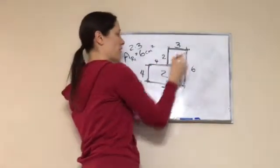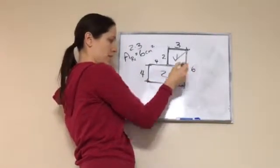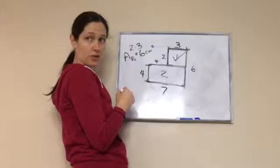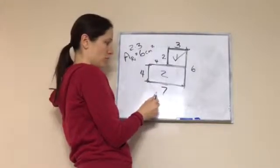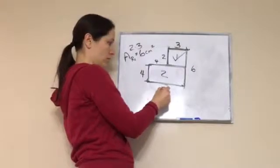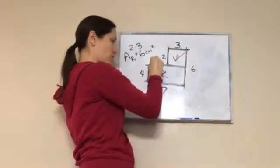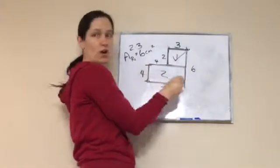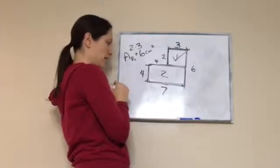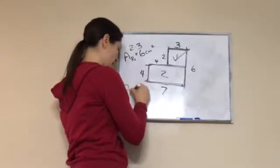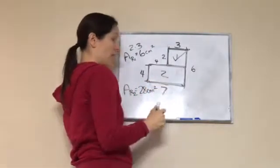The area of a rectangle is length times width, so two times three equals six. Area of rectangle one equals six centimeters squared — remember, centimeters times centimeters gives centimeters squared. Now for rectangle two, we need its length and width. We would use seven and four — a full length and full width. Seven times four is 28, so the area of rectangle two is 28 centimeters squared.